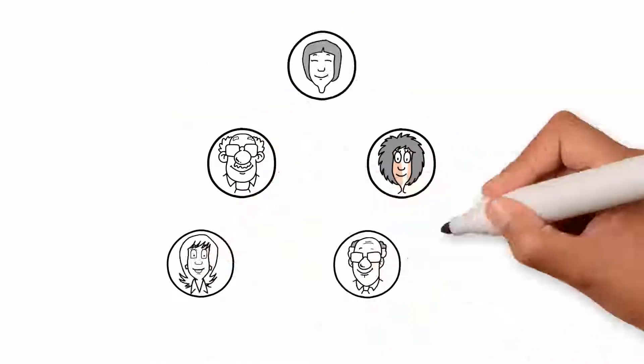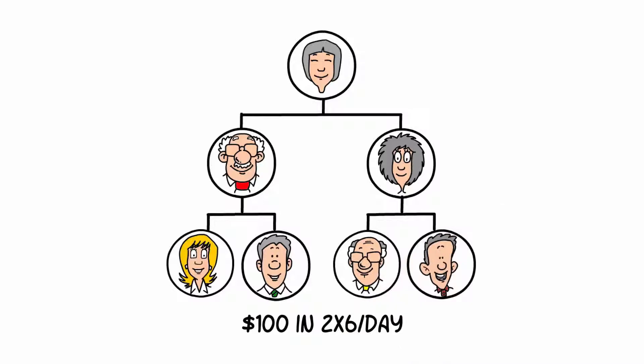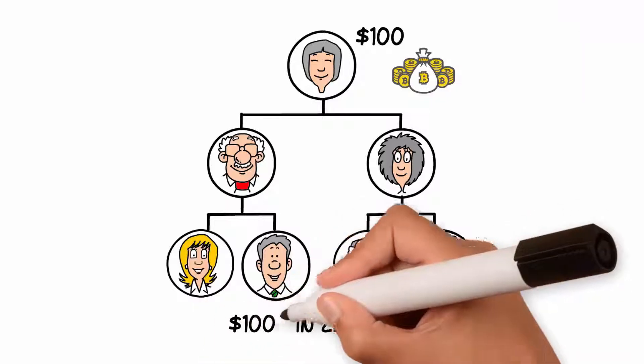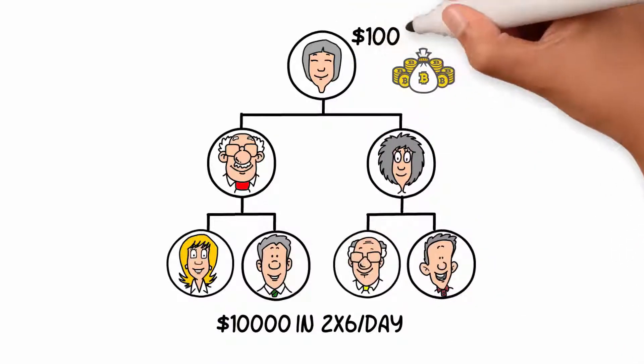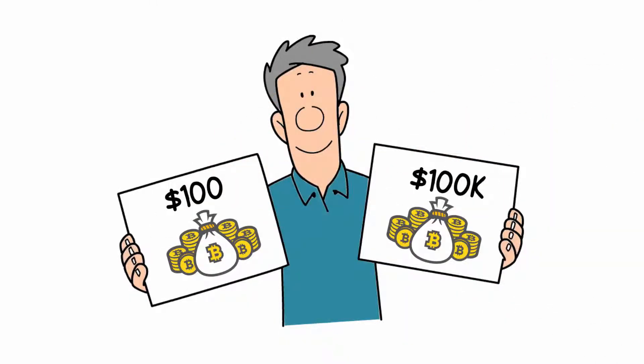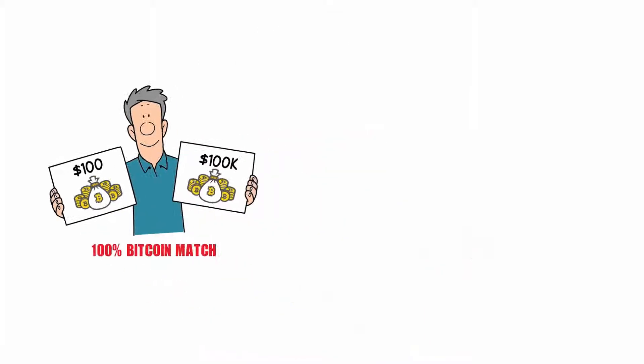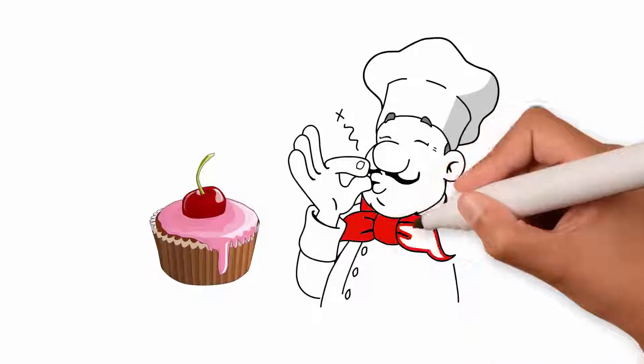If between all of your personally referred they earned $100 in 2x6 matrix bitcoin in a day, once qualified you would get a 100% bitcoin match. If they earned $1,000, you would get $1,000. If they earned $10,000 in bitcoin in a day, you would get $10,000 in bitcoin that day. Whether it's $100 in bitcoin or $100,000 in bitcoin in a year, month, week, or day, you would get 100% bitcoin match. This can become a virtually endless supply of bitcoin for you.